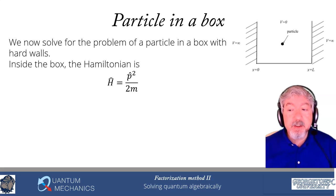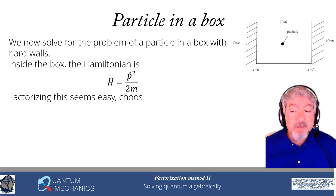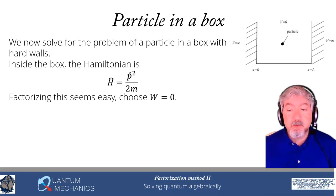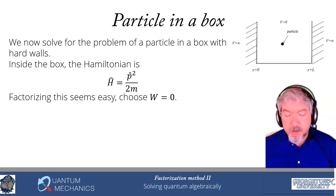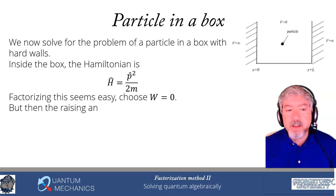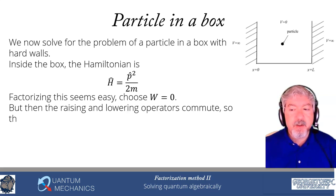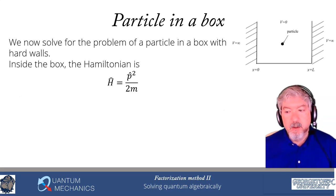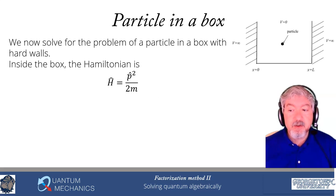Inside the box the Hamiltonian is very simple: just p²/(2m). It seems simple to factorize — choose the superpotential equal to zero, so A = p̂/√(2m). But if we try this, the raising and lowering operators commute with each other because p̂ commutes with itself, and there is no chain. It also gives us just one solution — zero energy — and that solution can't satisfy the boundary conditions. So that doesn't work.